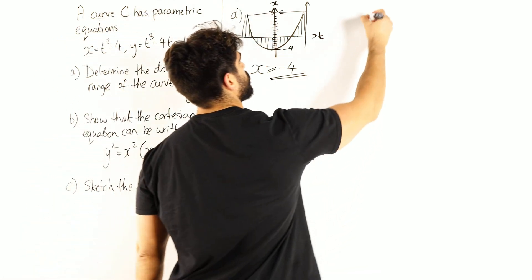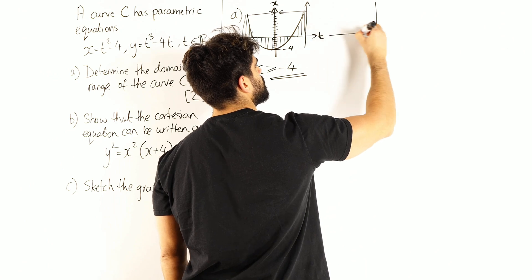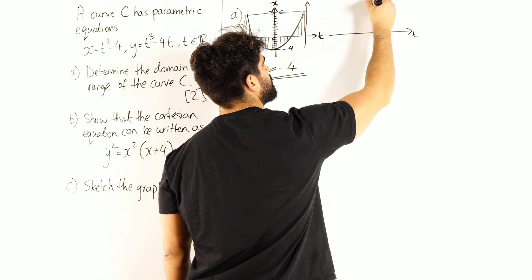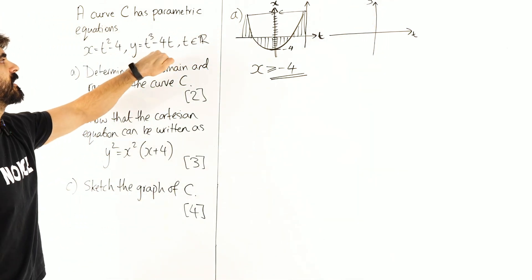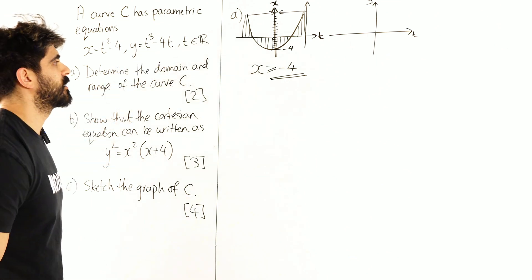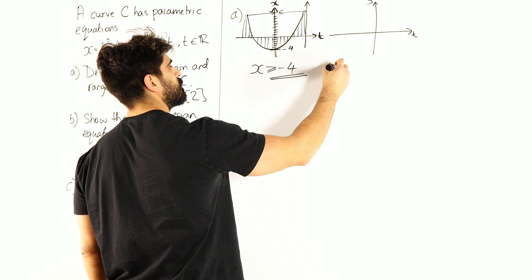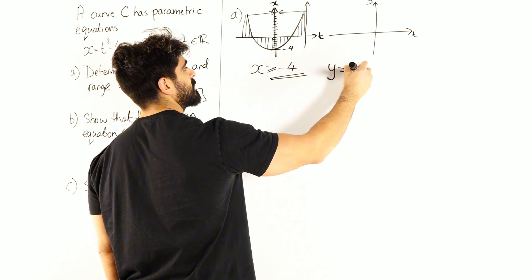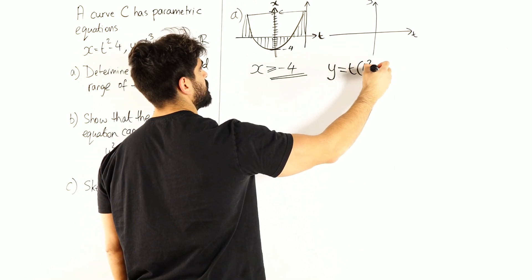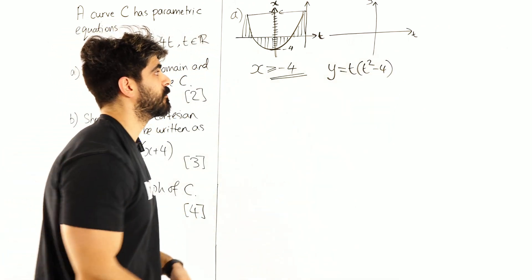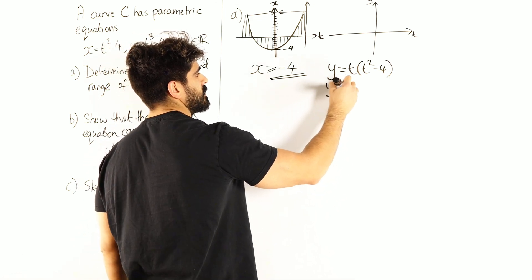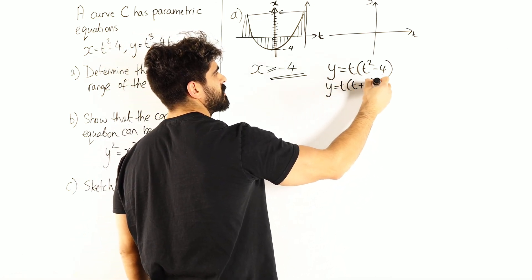Now in terms of y, you have t and y. If we were to sketch this, we're probably going to have to factorize it first. So y, because we always want to find the roots. y equals, factorizing out t, you'd get t squared minus 4. Which you can factorize even more, to get y is t, t plus 2, t minus 2.